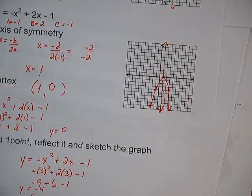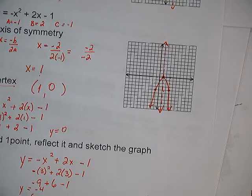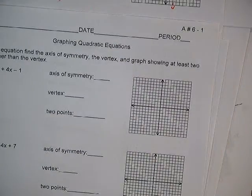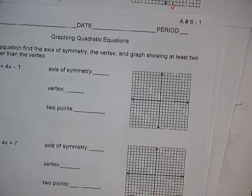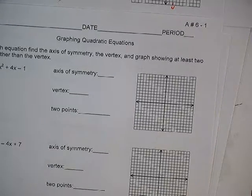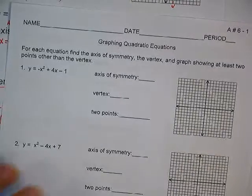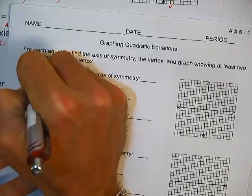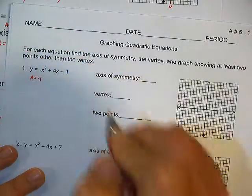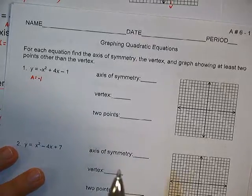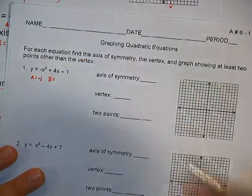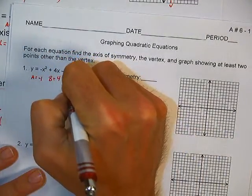I want to give one more example. If you go to number 1 on activity 6-1, we'll work this one together. It says first find the axis of symmetry. Let's label our a, b, and c. My a is negative 1, my b is 4, and my c is negative 1.